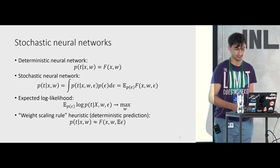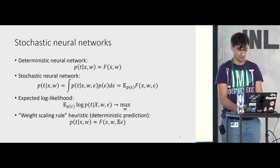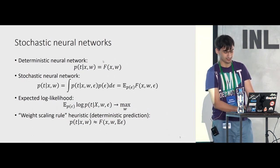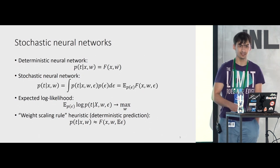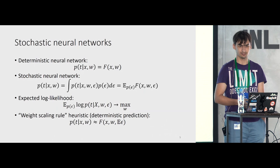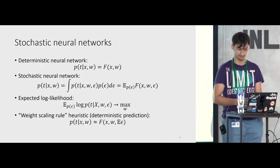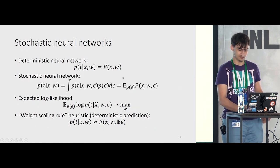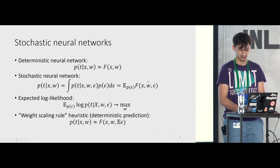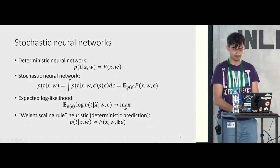In usual deterministic neural networks, you have your neural network f, which is a function of input x and weights w, and it outputs the predictive distribution p(t | x, w), where t are the targets — class labels or regression output. Stochastic neural networks, on the other hand, have a function f that depends on x, w, and epsilon — some random noise, for example dropout masks. To obtain the predictive distribution p(t | x, w), you need to marginalize out the noise epsilon by taking the expectation over it.